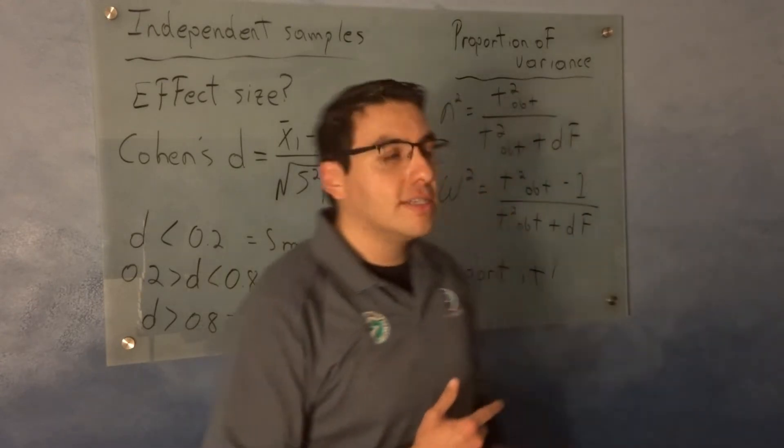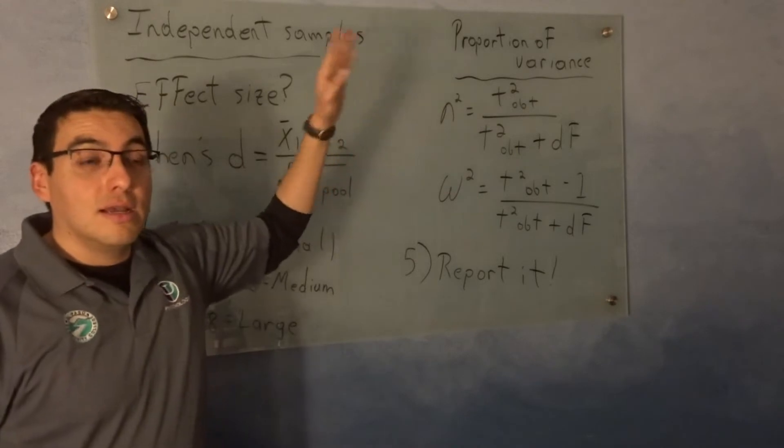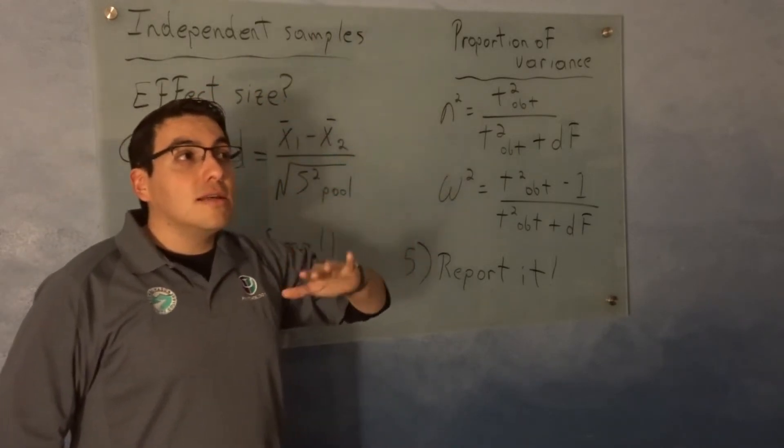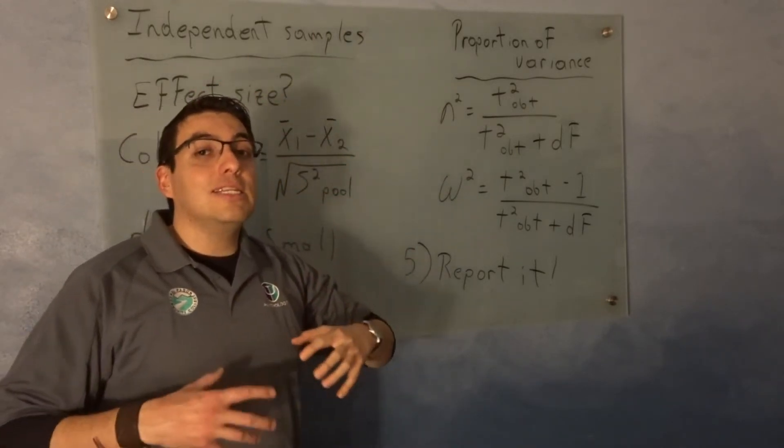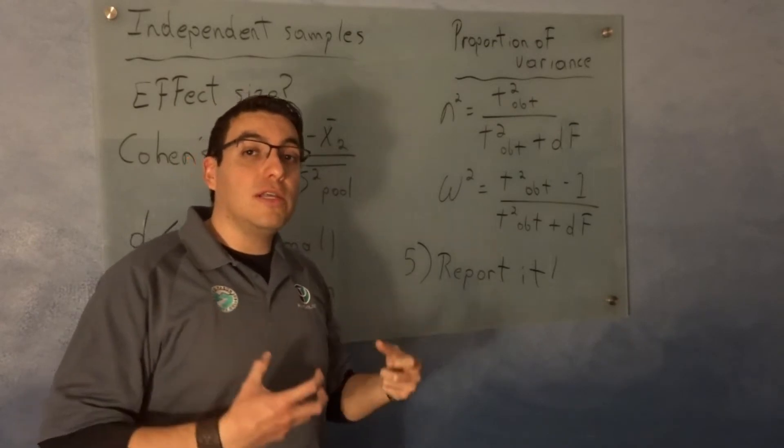This is one measure of effect size, but there's another one, the proportion of variance. The proportion of variance tells you the percentage that can be attributed to your effect.